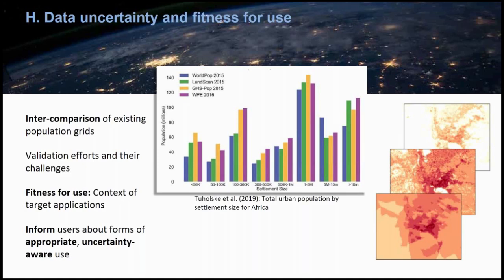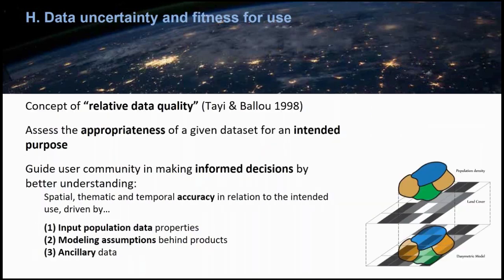A very effective approach is the so-called concept of fitness for use. Here we use the context of target applications to better understand what the data are used for, whether it is an appropriate use, and whether the user should be careful. We want to inform the user about forms of appropriate, uncertainty-aware use. The concept of relative data quality — fitness for use — describes how we can assess the appropriateness of a given data set for an intended purpose, guiding and informing the user community so they can make informed decisions by better understanding aspects of spatial, thematic, and temporal accuracy in relation to the intended use.